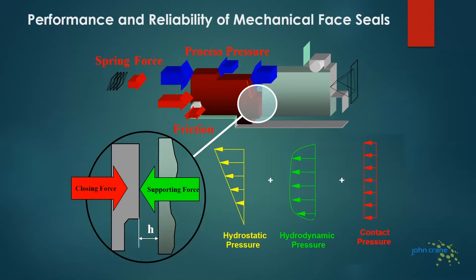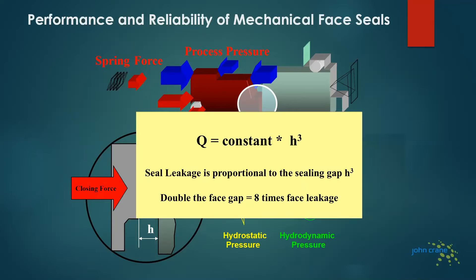The additional impact of high contact pressures is that through frictional effects, you're creating larger gaps between the faces through wear. As you increase the gap between the seal faces — represented by H in the picture — the leakage rate is proportional to the seal gap cubed. So if you double the face gap, you get eight times the leakage.